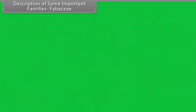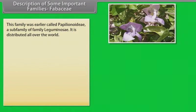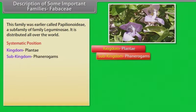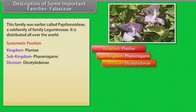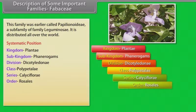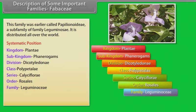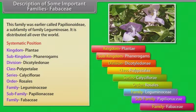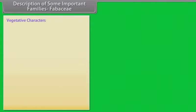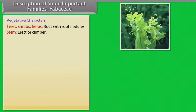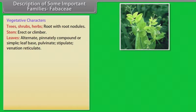Fabaceae: this family was earlier called Papilionatae, a sub-family of family Leguminosae. It is distributed all over the world. Systematic position: Kingdom Plantae, Sub-kingdom Phanerogams, Division Dicotyledoni, Class Polypetali, Series Calyciflorae, Order Rosales, Family Leguminosae, Sub-family Papilionatae. Vegetative characters: trees, shrubs, herbs; root with root nodules; stem erect or climber; leaves alternate, pinnately compound or simple, leaf base pulvinate, stipulate, venation reticulate.